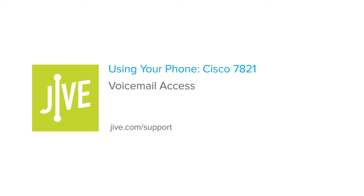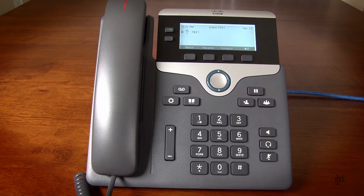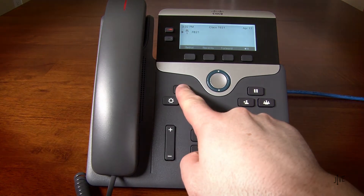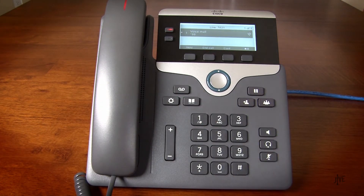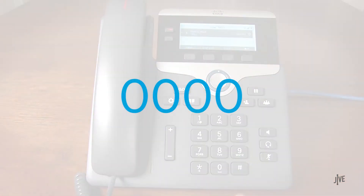In this video, you will learn how to access your voicemail on a Cisco 7821 phone. This can be accessed by pressing the voicemail key. Enter your four-digit password when prompted. If you have never created a password, the default is 0000.